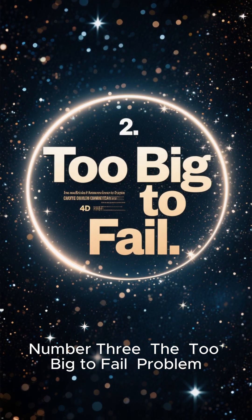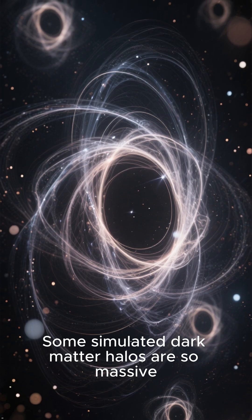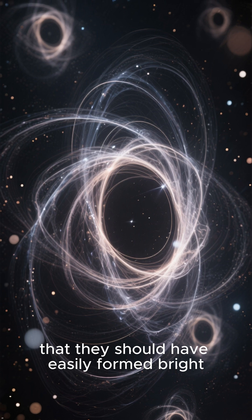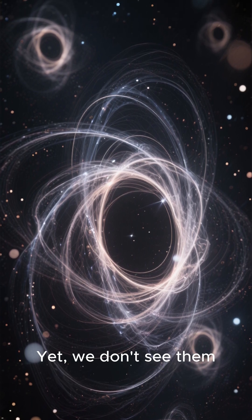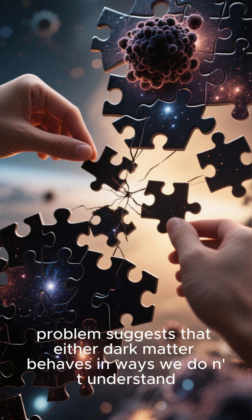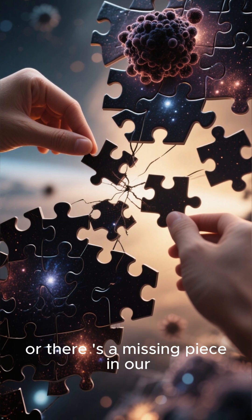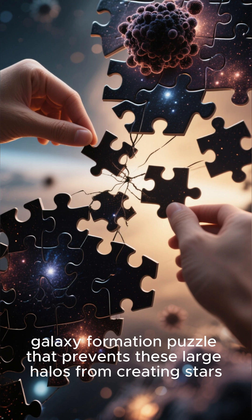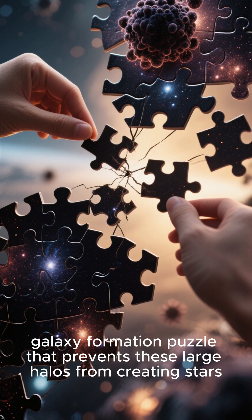Number 3: The Too-Big-to-Fail Problem. Some simulated dark matter halos are so massive that they should have easily formed bright, observable galaxies, yet we don't see them. This too-big-to-fail problem suggests that either dark matter behaves in ways we don't yet understand, or there is a missing piece in our galaxy formation puzzle that prevents these large halos from creating stars.